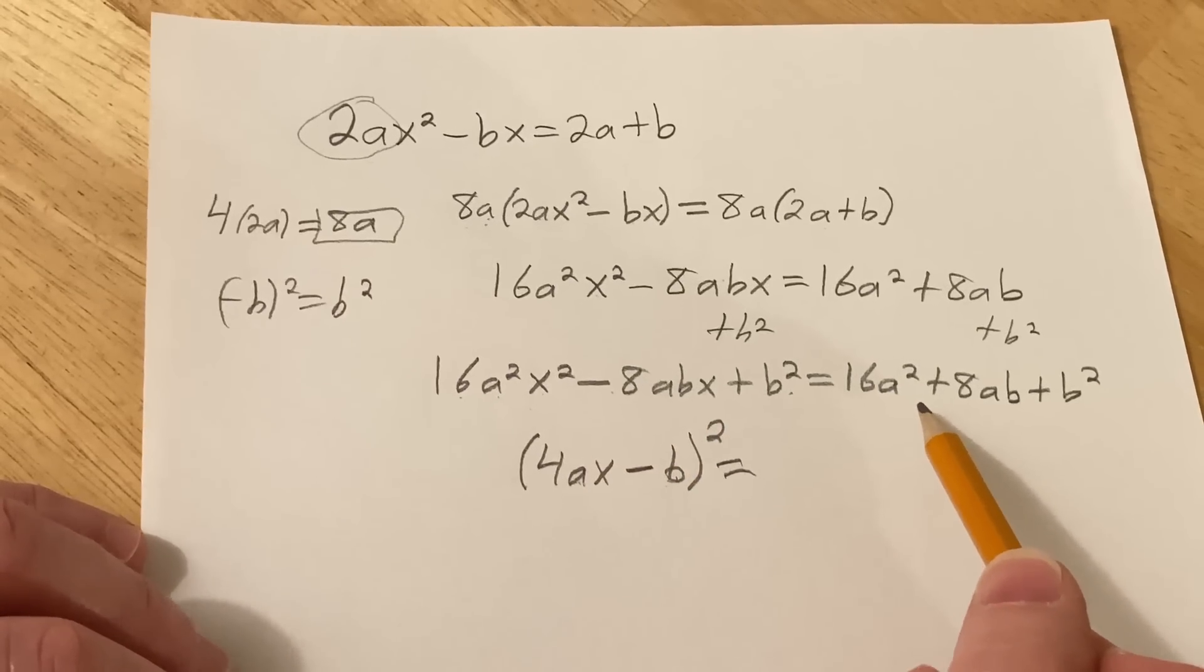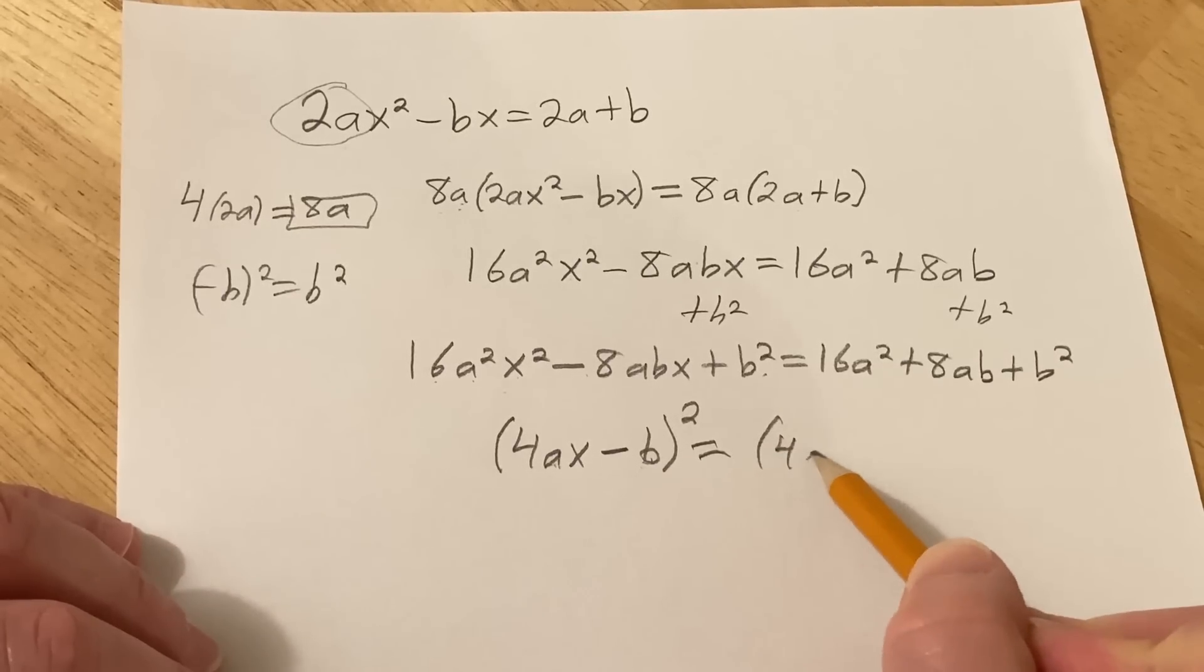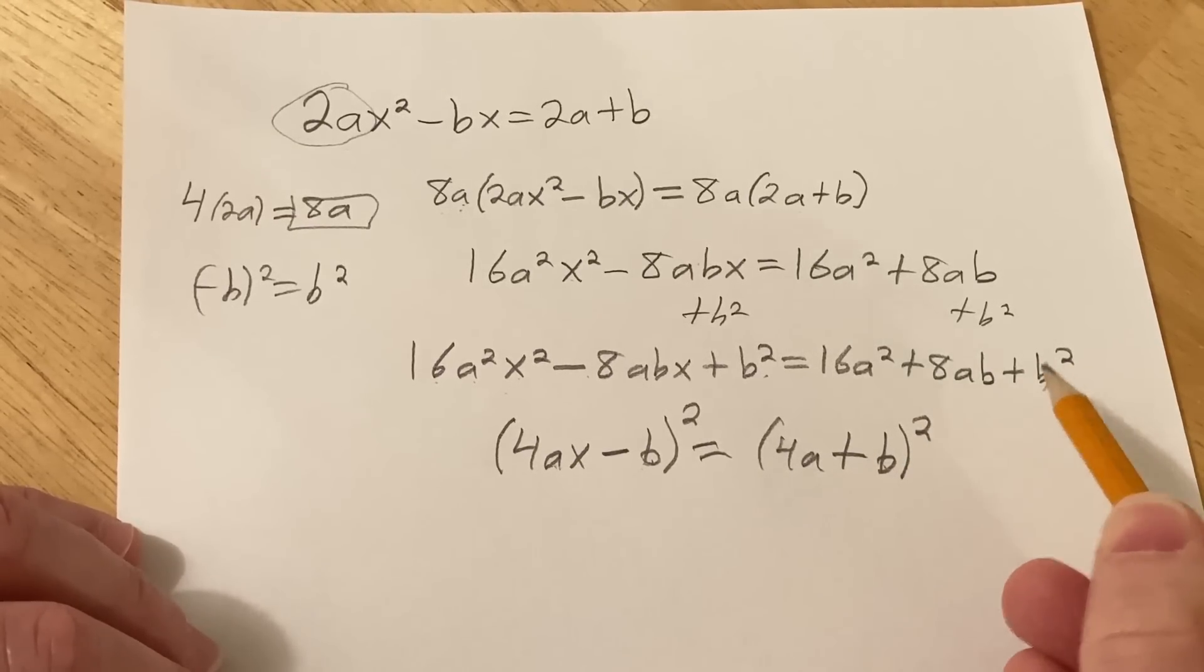This is also a perfect square trinomial. It's going to be 4a plus b squared. Let's check that. b squared is b squared. 4a quantity squared is that. Multiply these and double them. There we go.